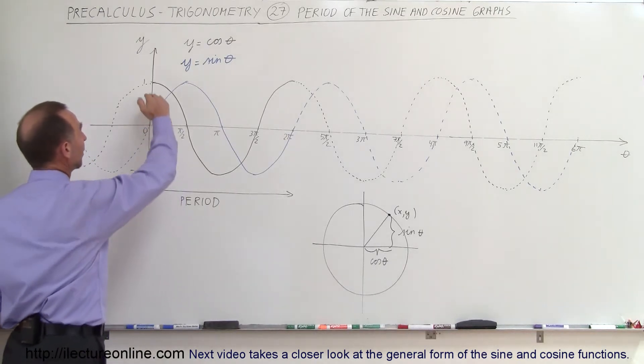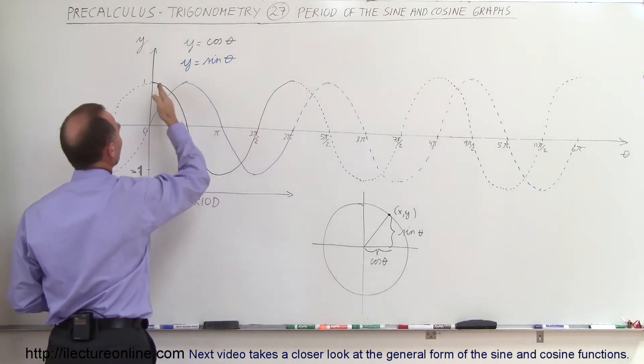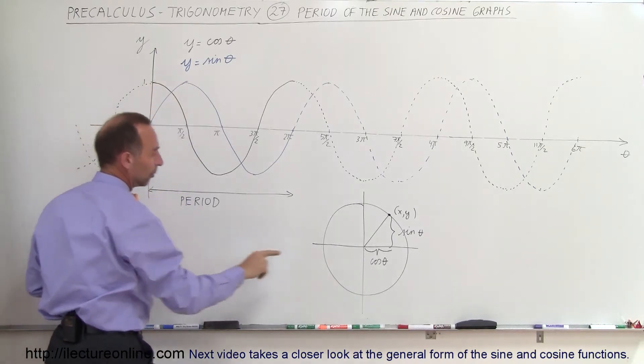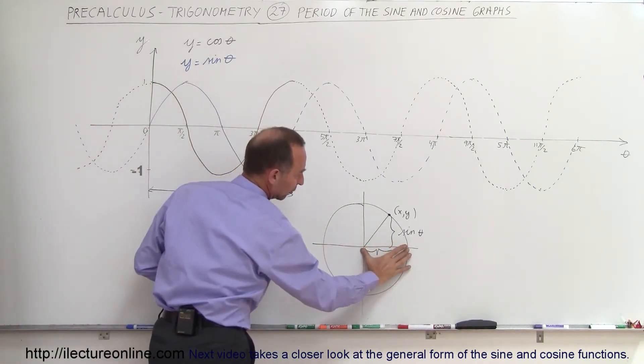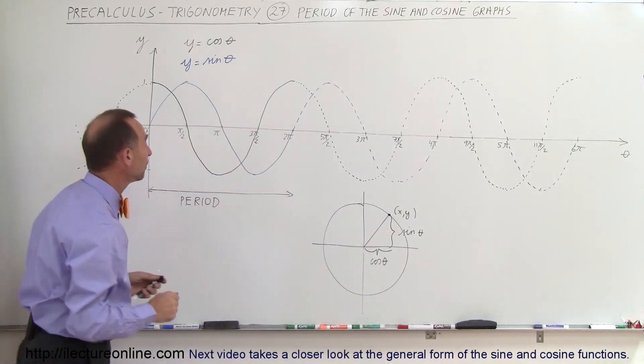So here in black we have the cosine of theta represented by this line. Notice that the cosine of theta is equal to 1 when the angle is 0, because when the angle is 0 this is the cosine of theta, equal to 1, the radius of the unit circle.